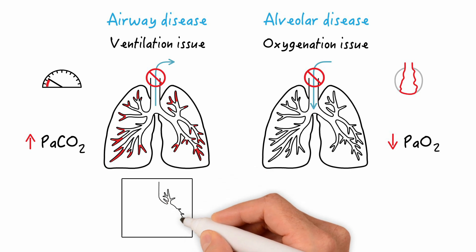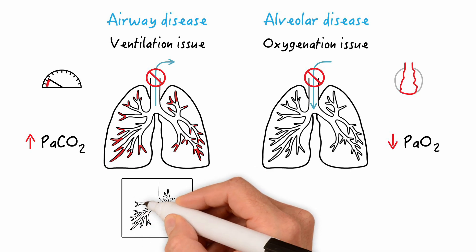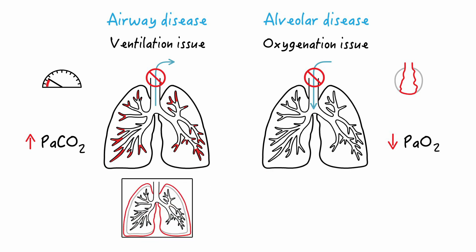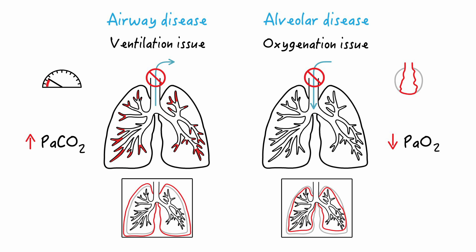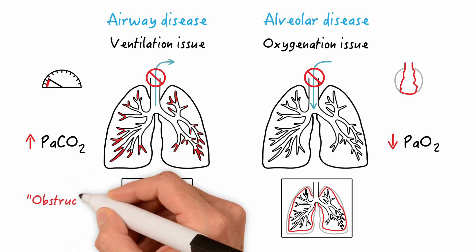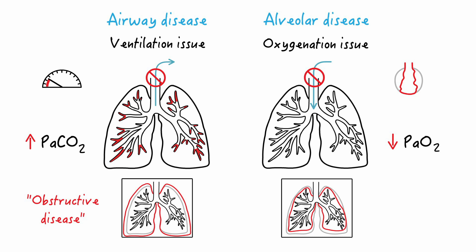On an x-ray, the airway disease patient usually has larger looking lungs because of air trapped over time. On the other side, the lung appears to shrink in size, so the chest x-ray will appear smaller. This side is referred to as obstructive disease, while the other side is referred to as restrictive disease.